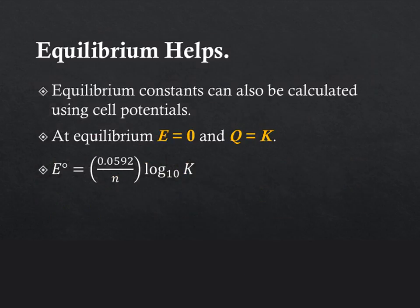Equilibrium constants can also be calculated using cell potentials. At equilibrium, cell potential is 0. That means at equilibrium, Q equals K. And since that's true, we can calculate cell potential lessly. Cell potential is 0.592 over the number of moles of electrons being transferred times the base 10 log of our cell potential. No, I mean, sorry, of our equilibrium constant.